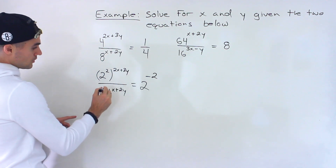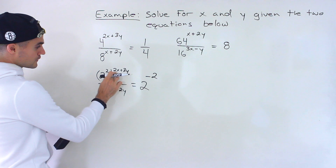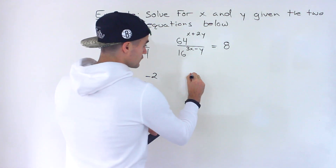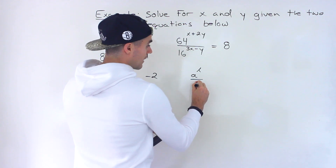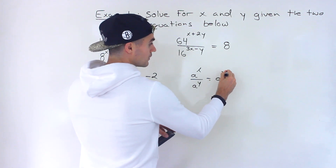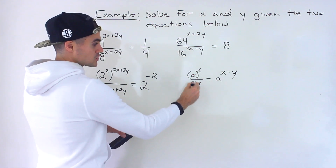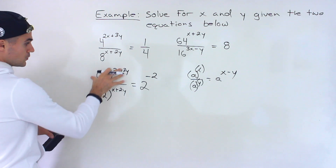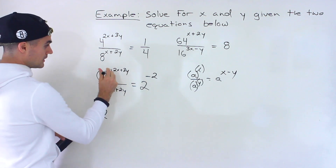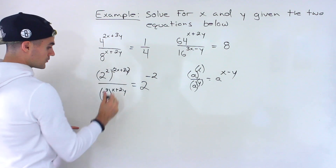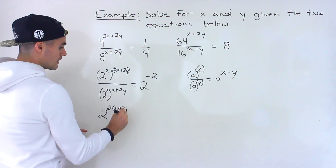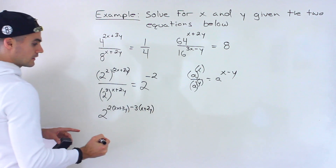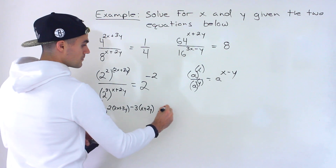We have two exponential expressions on the left side that are dividing and have the same base. We can subtract these exponents, because a to the power of x over a to the power of y equals a to the power of (x - y). So we can rewrite this as 2 to the power of 2·(2x + 3y) minus 3·(x + 2y), and that equals 2 to the power of negative 2.